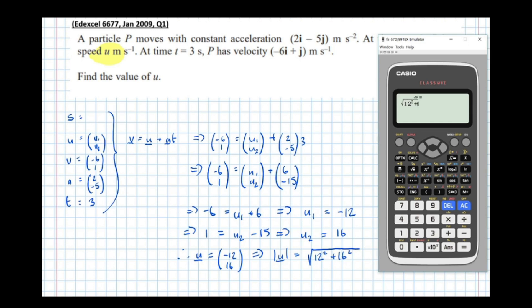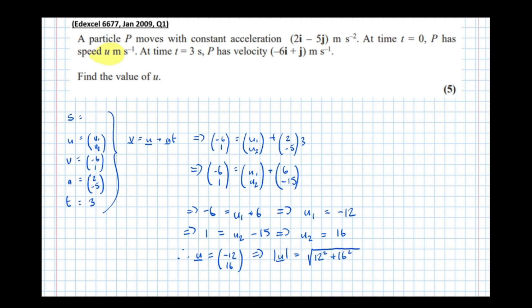Typing in the calculator: the square root of 12² + 16² equals 20. In mechanics, units are important: 20 meters per second. There we have it—an exam question involving constant acceleration in two dimensions.